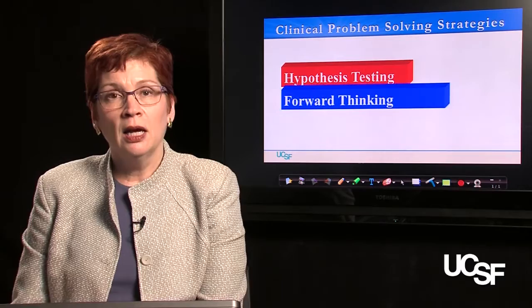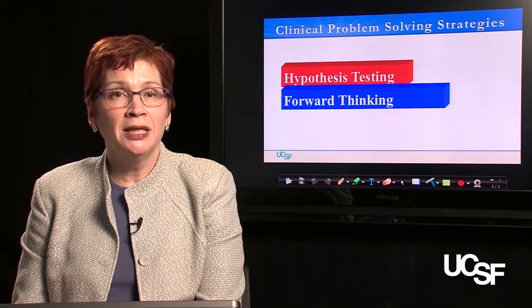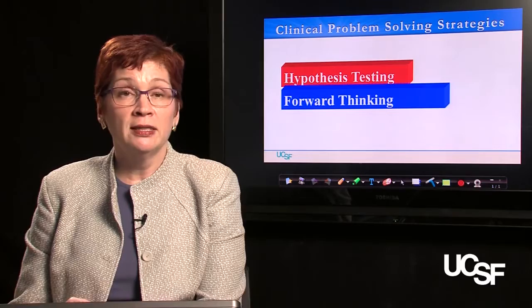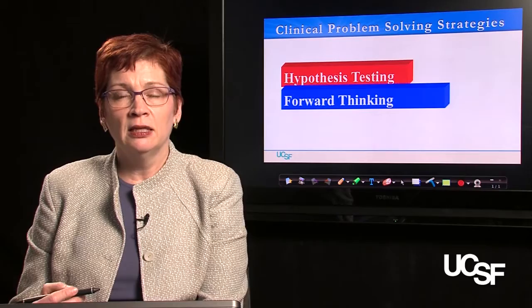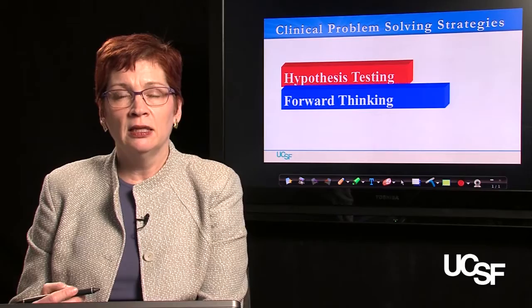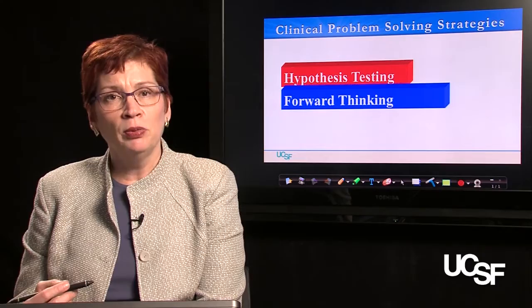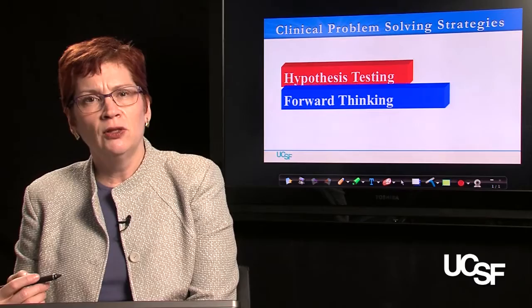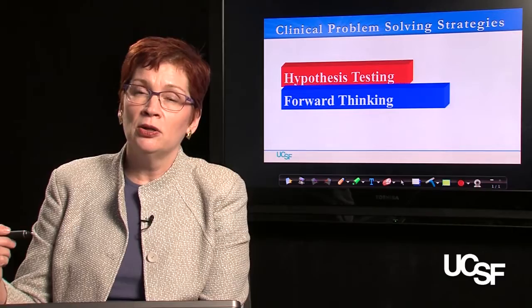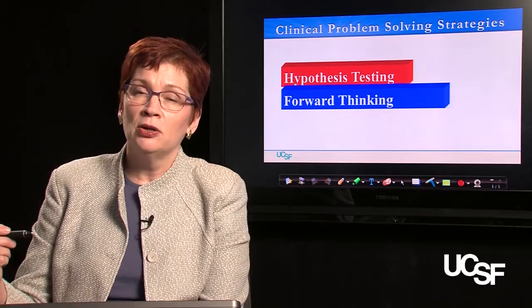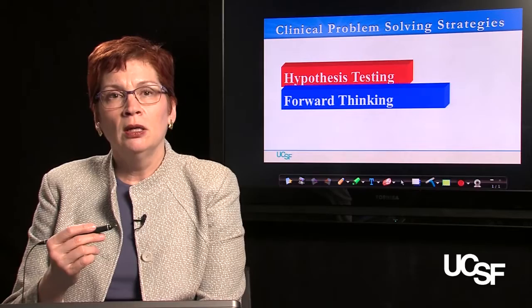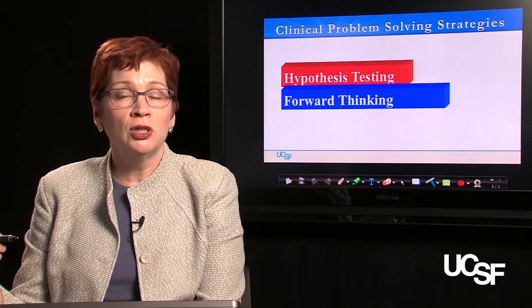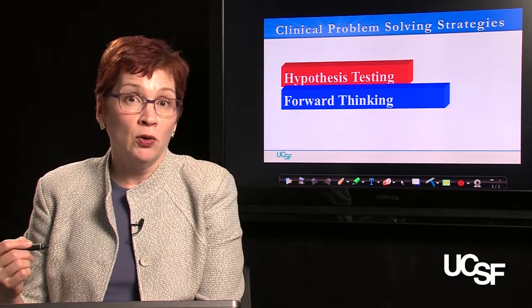In contrast, forward thinking uses a branch-chain algorithm to sequentially narrow the set of differential diagnoses by accumulating more and more precise information about the patient's initial complaint. For example, if a patient presents with low platelets, the clinician asks: is that due to a decrease in production or an increase in destruction? If it's due to increased destruction, is it associated with a coagulopathy or not? If associated with a coagulopathy, is it also associated with other symptoms like fever or confusion? Working through this branch-chain either/or sequence refines and decreases the number of differential diagnoses to consider.